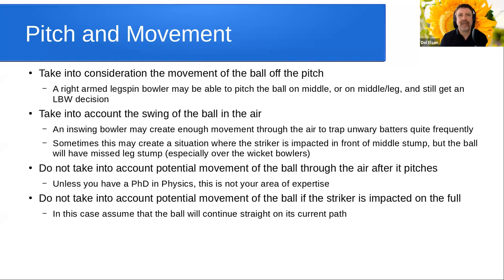Take into account the swing of the ball in the air. For example, an in-swing bowler may create enough movement through the air to trap unwary batters in front of the stumps quite frequently. However, sometimes this creates a situation where the striker is impacted in front of middle stump but the ball will have missed leg stump, especially for a bowler bowling over the wicket — because of the swing of the ball through the air.